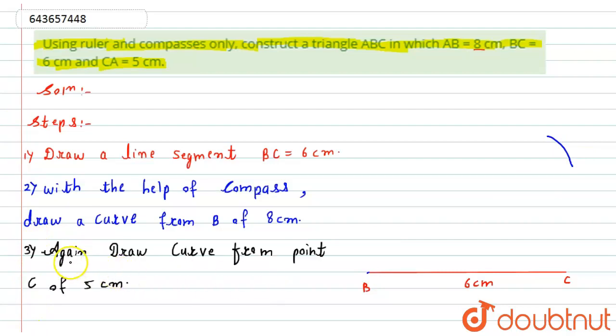Okay, now let's say the third step. In this step, again I will draw a curve from point C of 5 centimeter. It means I will take a measurement of 5 centimeter into the compass, I will put one end of the compass over here, then I will make a curve at 5 centimeter which should intersect this first curve at some point.